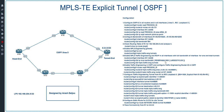Here we have a scenario with five routers: R1, R2, R3, R4, and R5, along with the instructions for configuration. In every scenario, we will learn one or two new topics. After configuring 10 or 15 scenarios, we will learn many options about MPLS-TE. Let me start the configuration of this scenario according to the instructions.